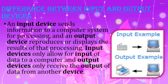Difference between Input and Output Devices. In this slide I explain what the difference between Input and Output Devices is. An Input Device sends information to a computer system for processing. An Output Device produces or displays the result of that processing. An Input Device only allows for input of data to a computer, while an Output Device only receives the output of the data from another device.